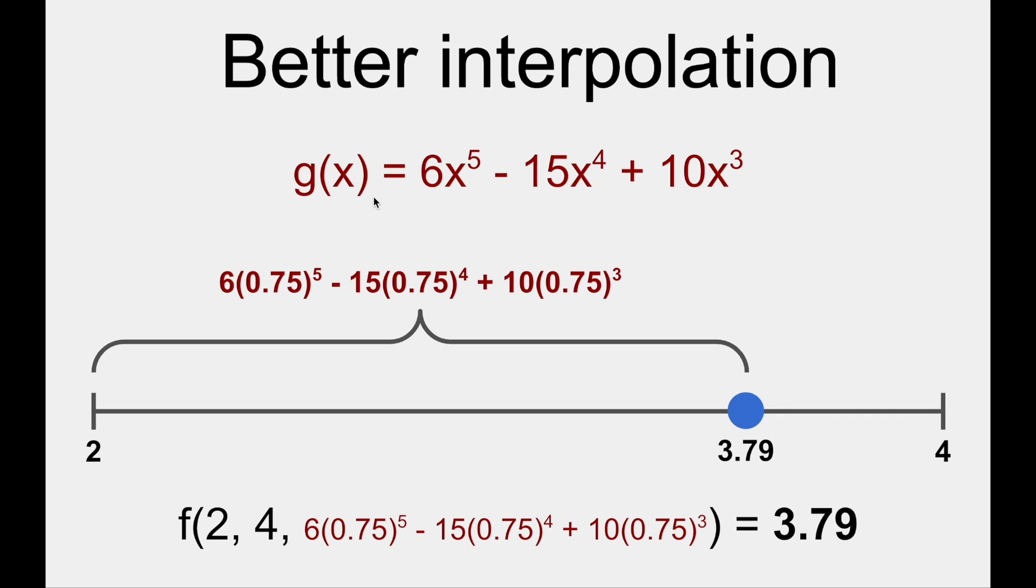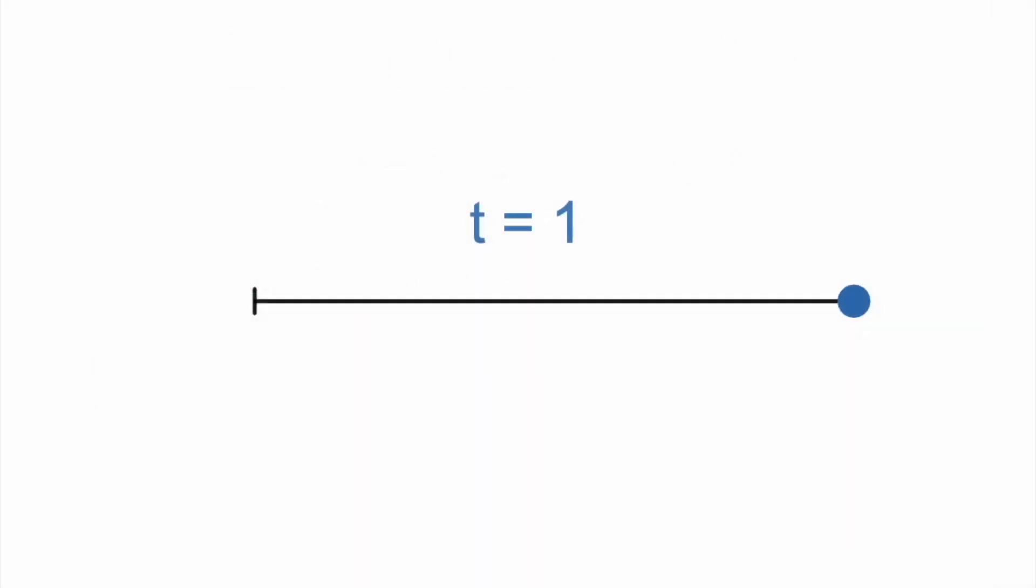Great, so we have a smoother way to interpolate between numbers. If we want to interpolate between a and b at time point x, then we interpolate between a and b linearly with t equals 6x to the 5th minus 15x to the 4th plus 10x cubed. Watch how the interpolated value changes at different rates depending on the value of t.